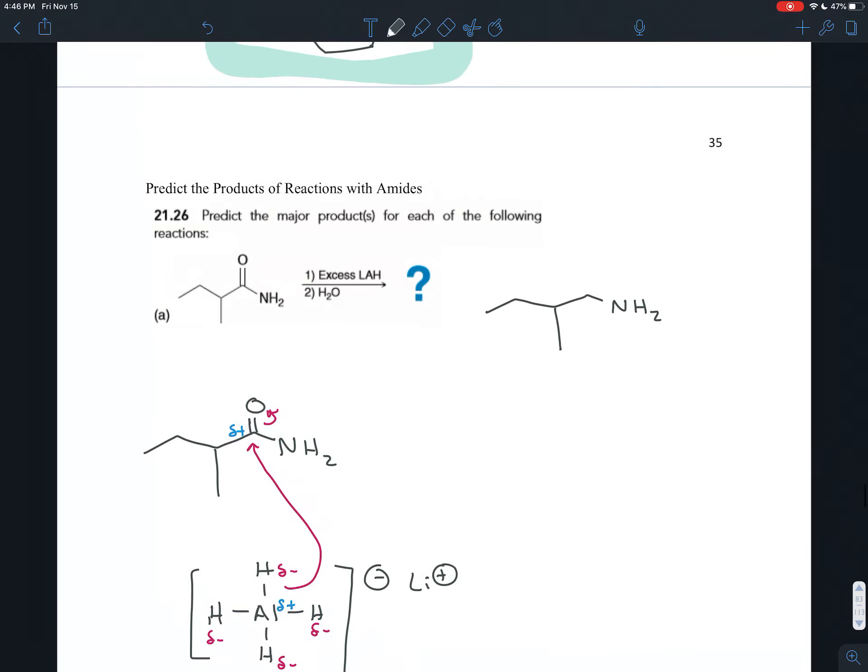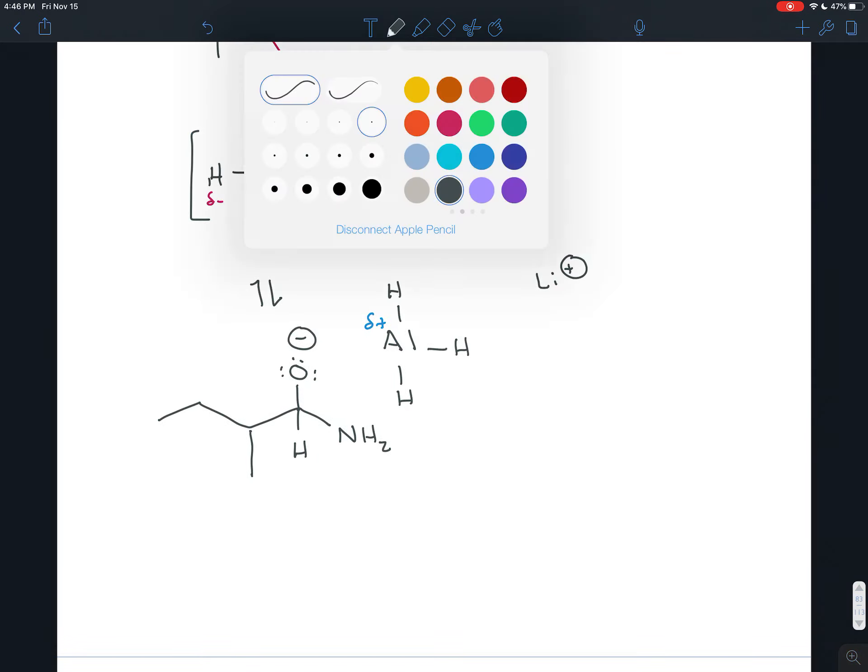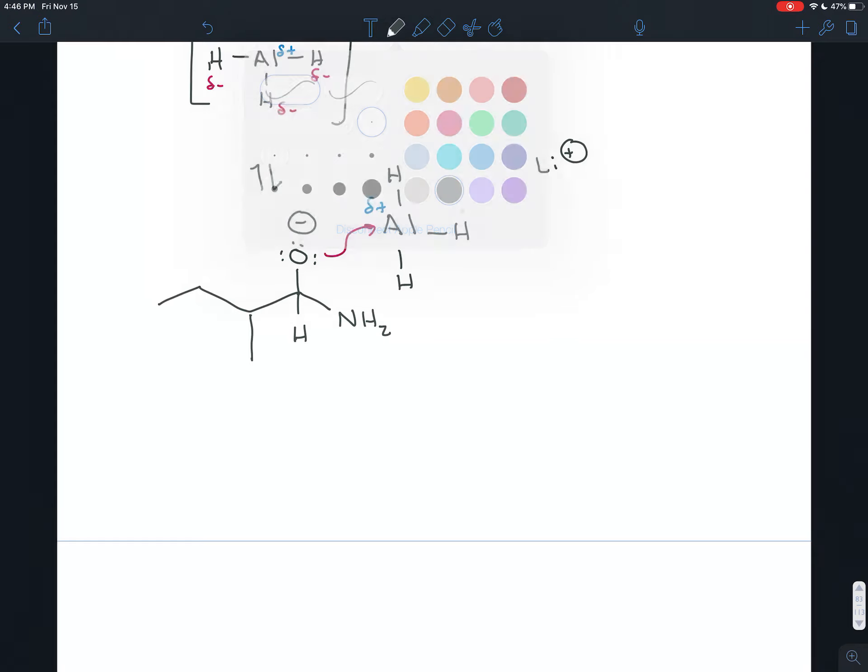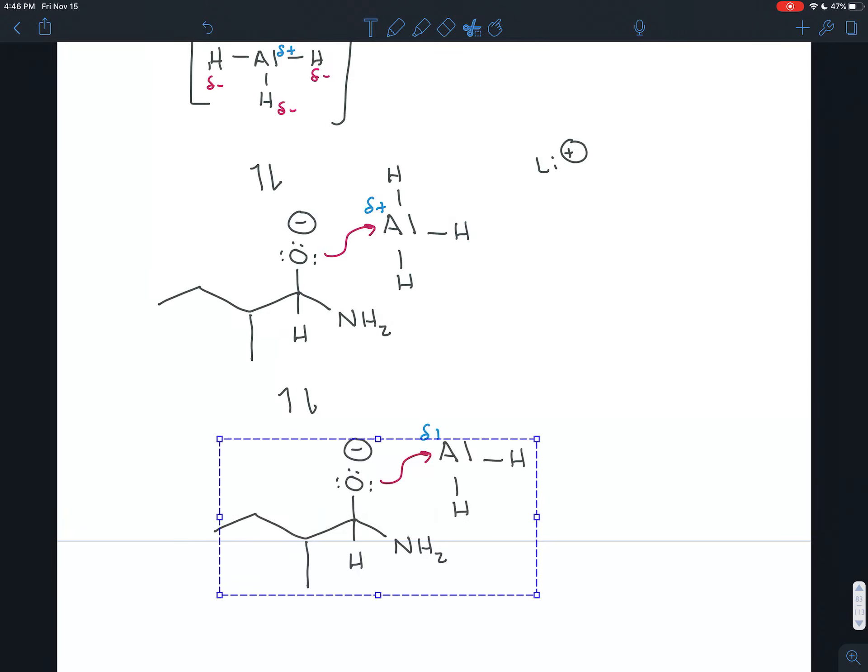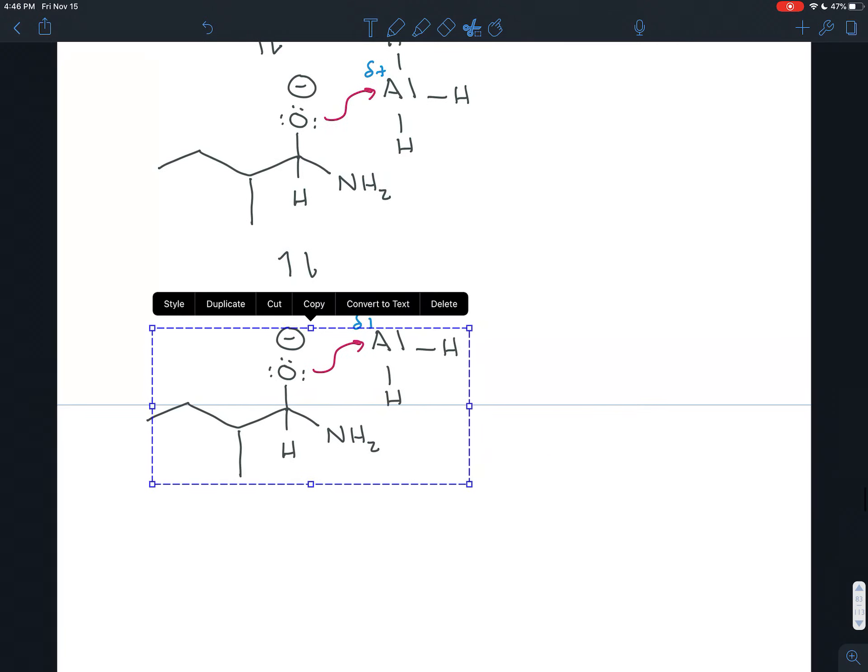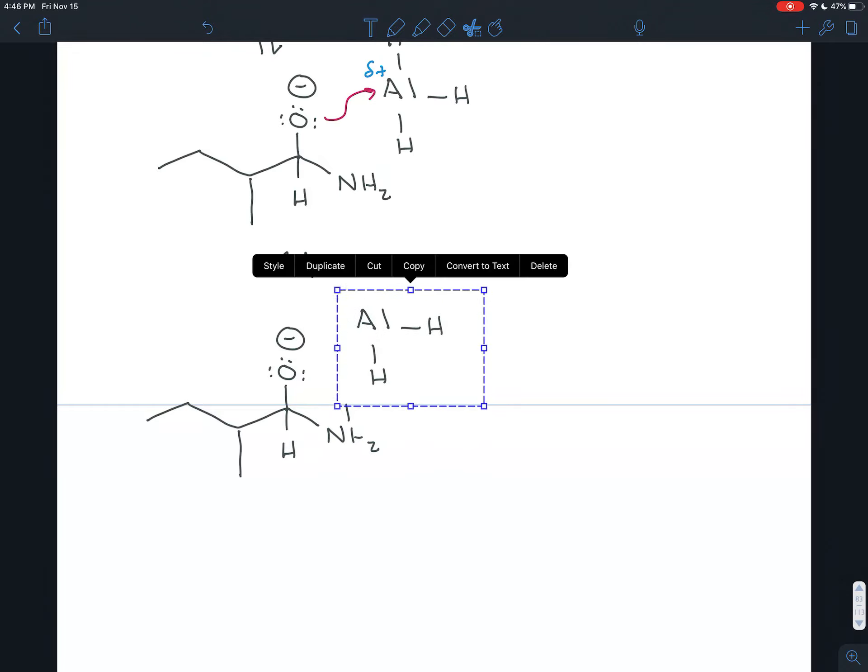So if you notice, in this reaction we ultimately get rid of this oxygen. But right now it's a terrible leaving group. But the oxygen can attack the slightly positive aluminum. And you end up forming this strange sort of molecule. And this particle is with a bond between the oxygen and the aluminum.